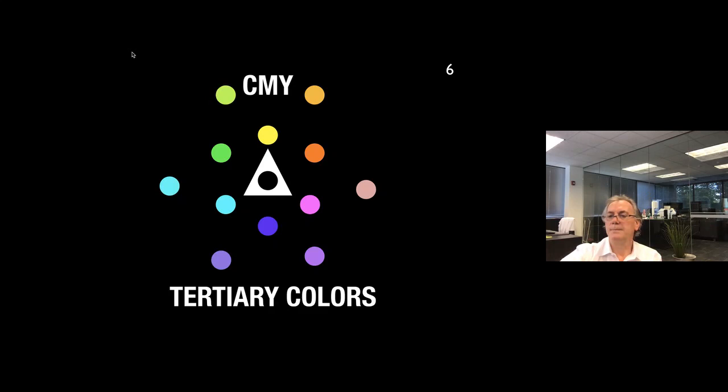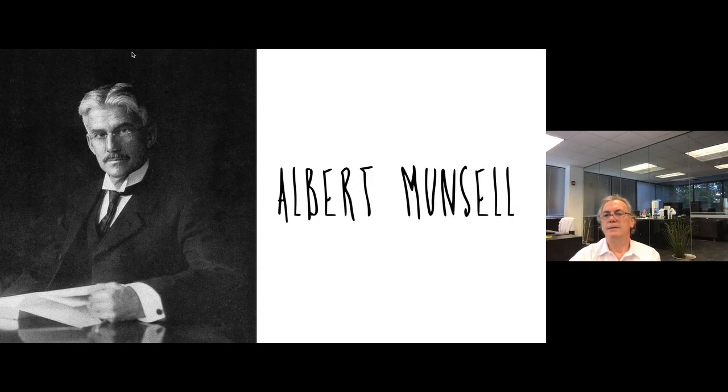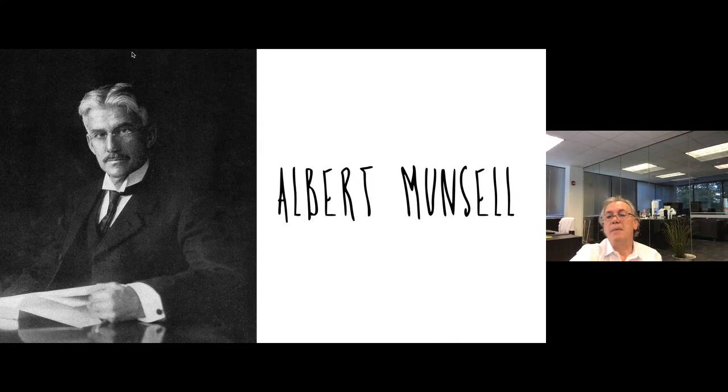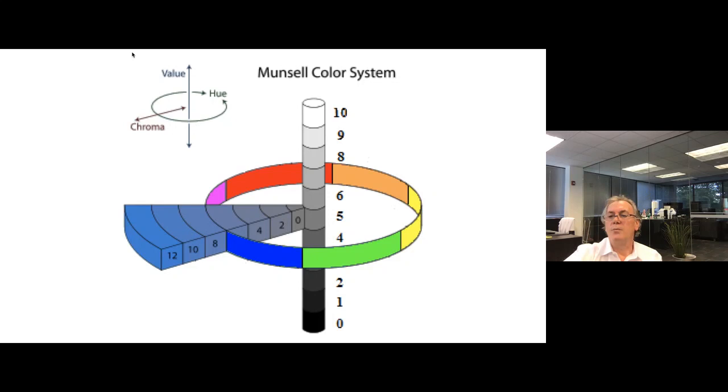Albert Munsell contributes in amplifying the ROY G BIV system, and adds three dimensions to color. So, the three dimensions are the hue, chroma, and value.